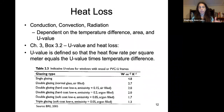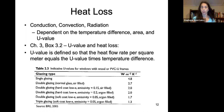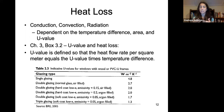Heat loss depends on conduction, convection, and radiation, and is dependent on the temperature difference, the area, and the U-value. There is a full section on U-value and heat loss in your textbook. If you have a single-glazed window, your watts per meter squared per Kelvin will be much higher than if you have triple glazing. The heat flow per square meter equals the U-value times the temperature difference, so you will have less heat going through triple glazing than single glazing.